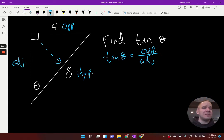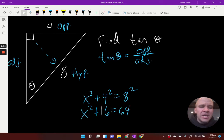Well, 4 and 8, that's not part of a triple. So I need to do X squared plus 4 squared equals 8 squared. I got to do a little Pythagorean theorem to figure this thing out. So I've got X squared plus 16 equals 64.